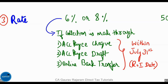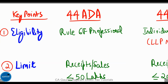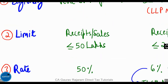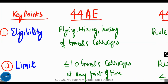In all other cases, the deemed income rate will be eight percent. The second section is Section 44ADA. Any Rule 6F professional is eligible. The limit is ₹50 lakhs. The rate of deemed income is 50 percent.